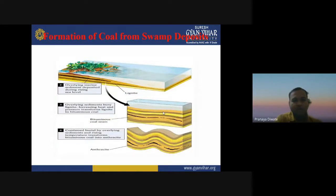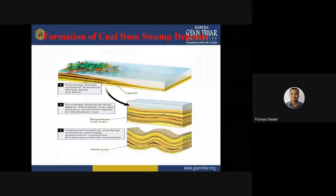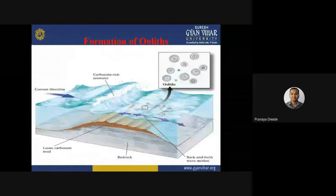Coal is a sedimentary unit formed from swamp deposits. Coal is deposited in a swampy basin, mostly with overlying marine sediment deposited during rising sea level. The overlying sediment buries and compresses the organic material. The detailed formation of coal, lignite, and mudrock will be discussed in a separate lecture.